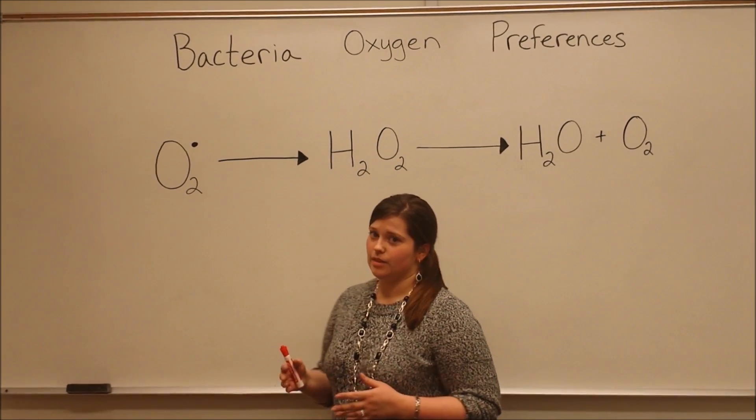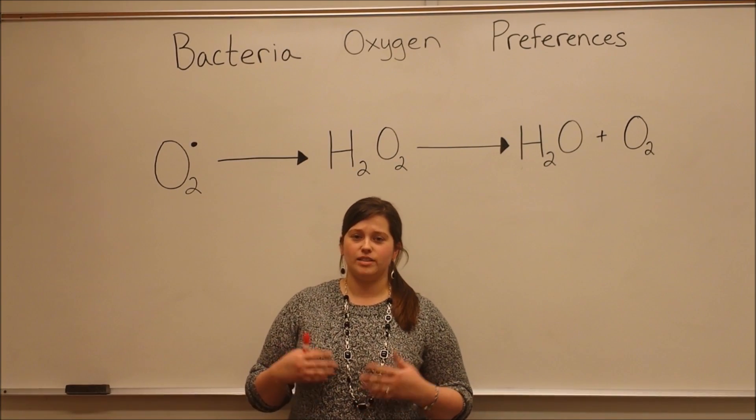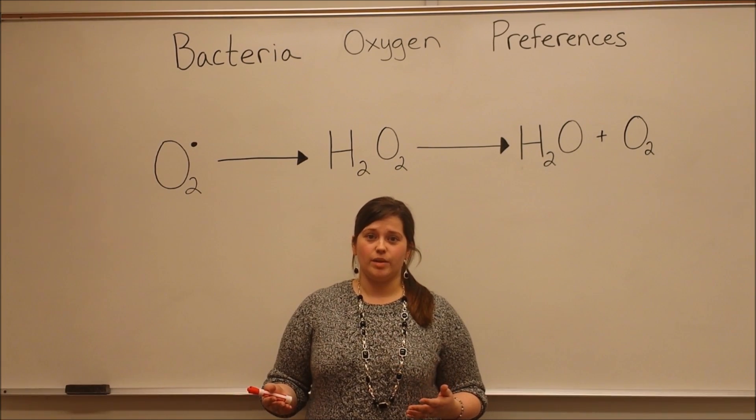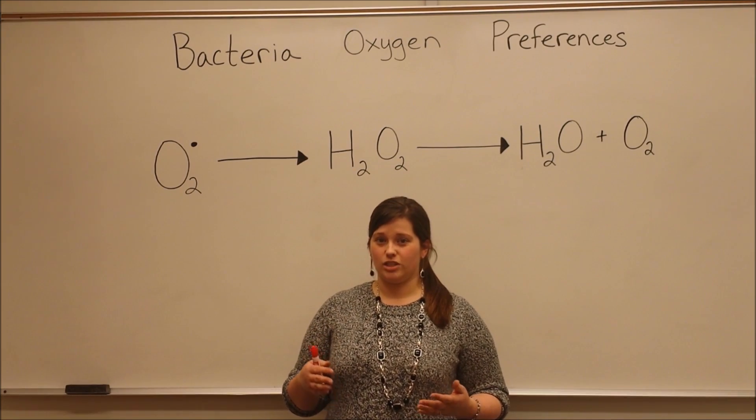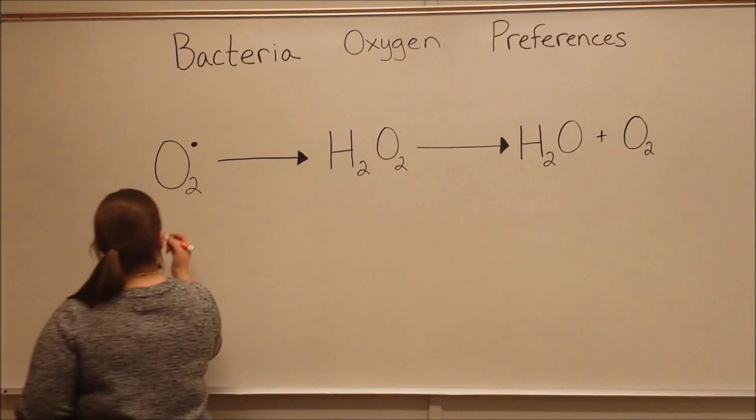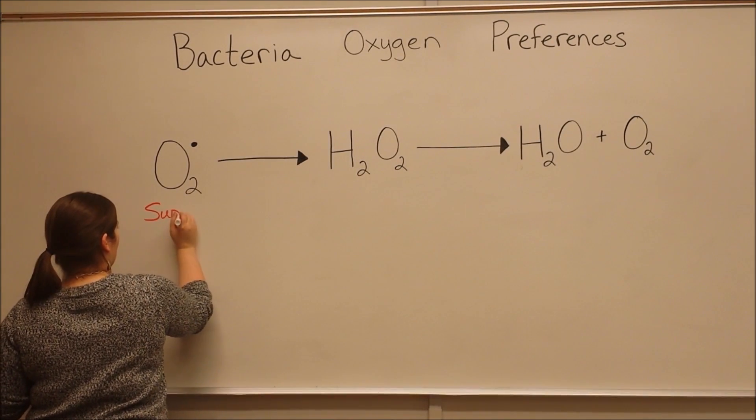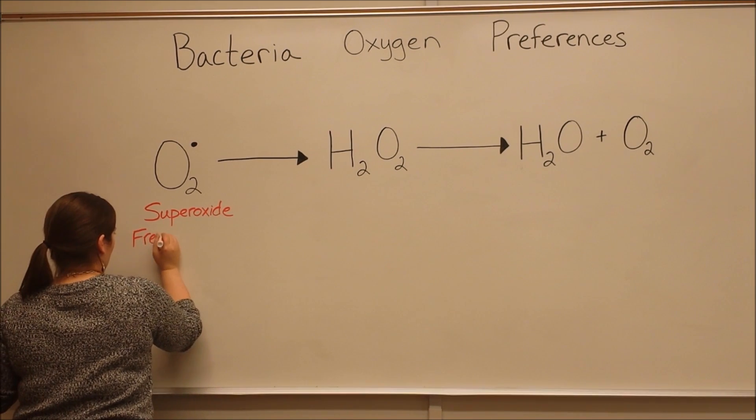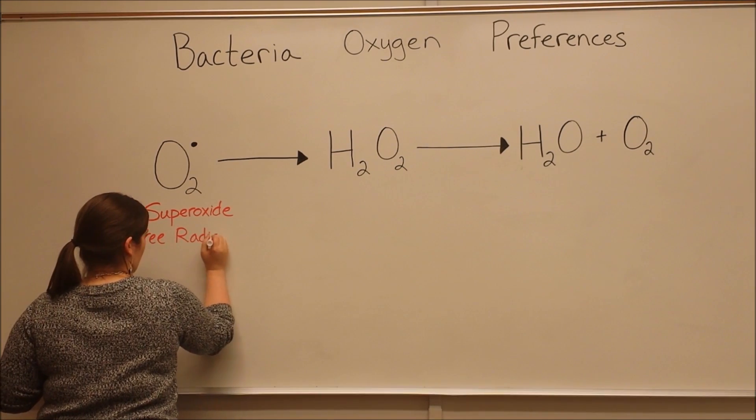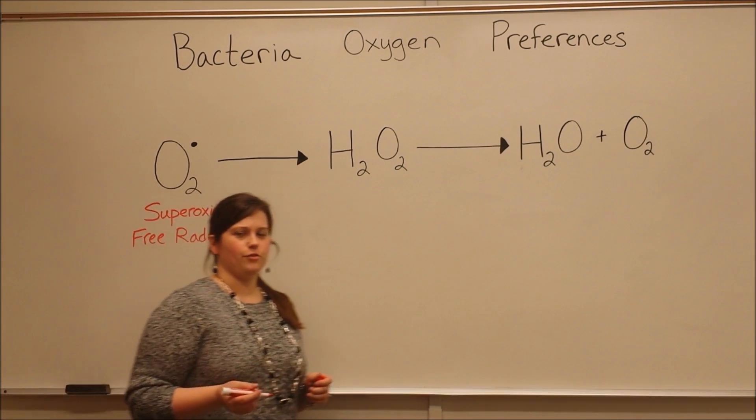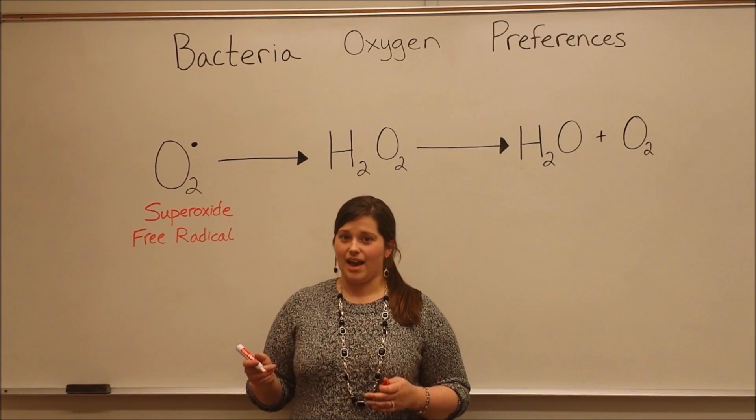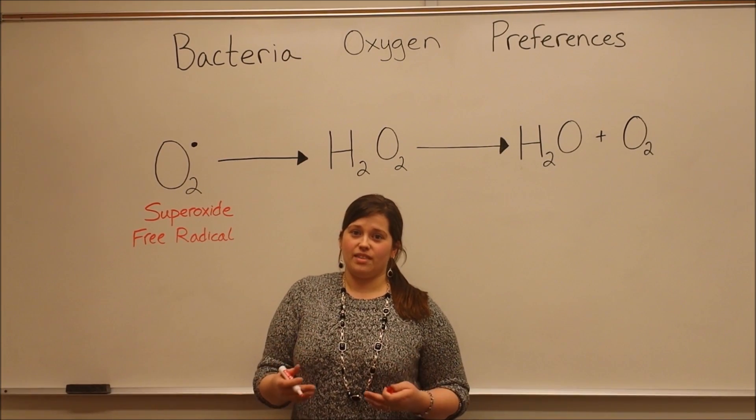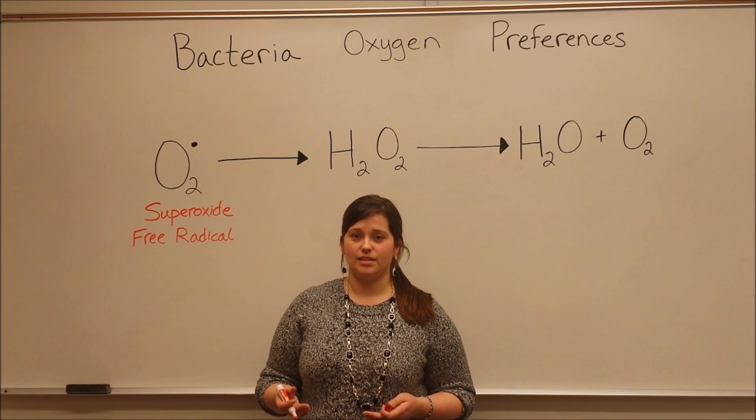Now, most organisms, including humans, when our cells go through a process called cellular respiration, this is what the cells use in order to generate energy, they have a byproduct called a superoxide free radical. Superoxide free radicals are very, very reactive because they have this extra electron. Because they'll react with so many things, they can really disrupt a lot of cellular processes. This makes them toxic.